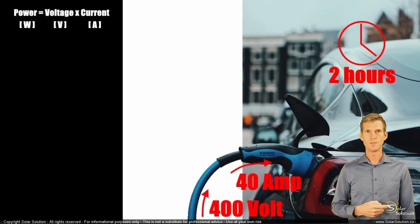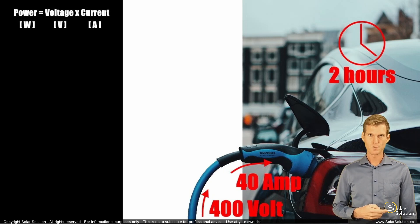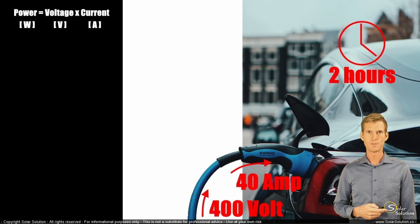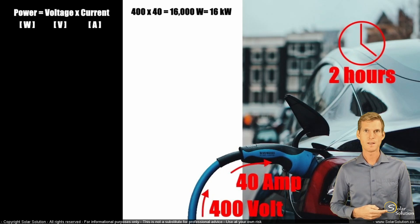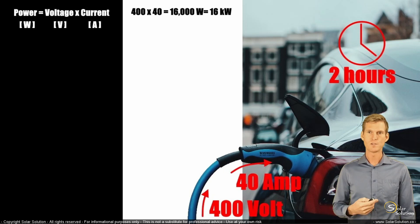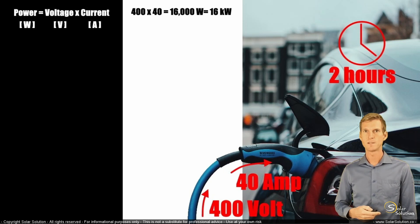Let's calculate the power rate at which we are charging your battery. The power is the voltage times the current. So 400 volts times 40 amps equals 16,000 watts. So the power with which we are charging your vehicle is 16,000 watts, or you can also express that as 16 kilowatts — the kilo just stands for 1,000.